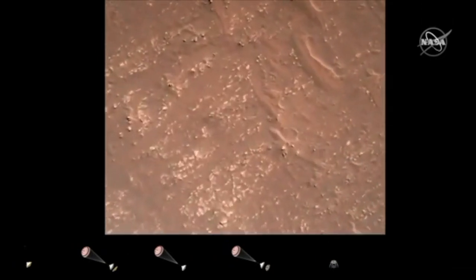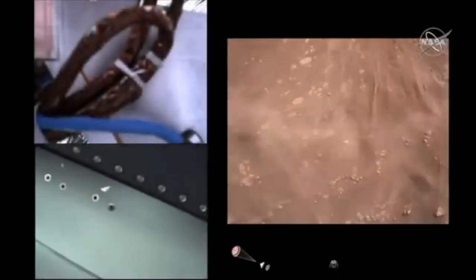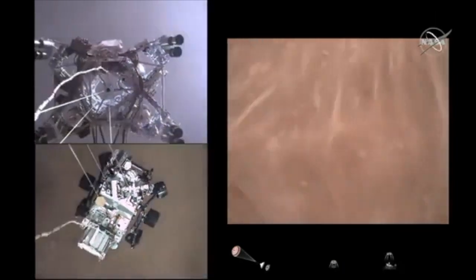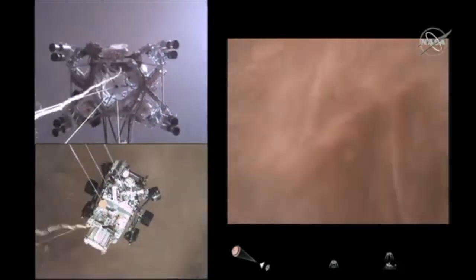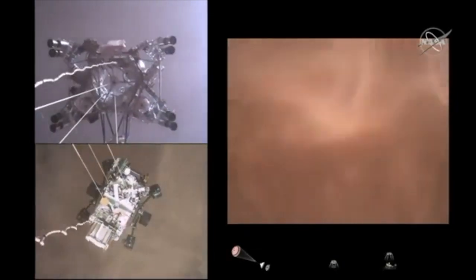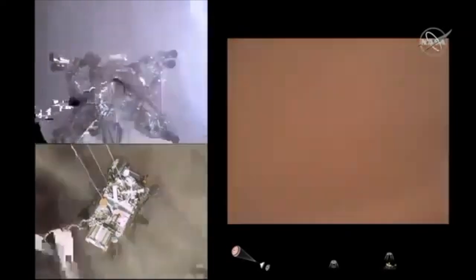We have started our constant velocity accordion which means we are conducting the sky crane, about to conduct the sky crane maneuver. The sky crane maneuver has started about 20 meters off the surface. We are getting signals from MRO.